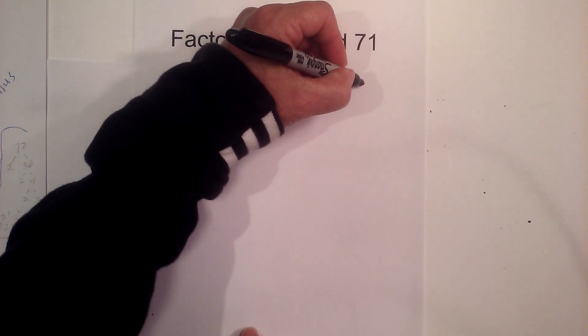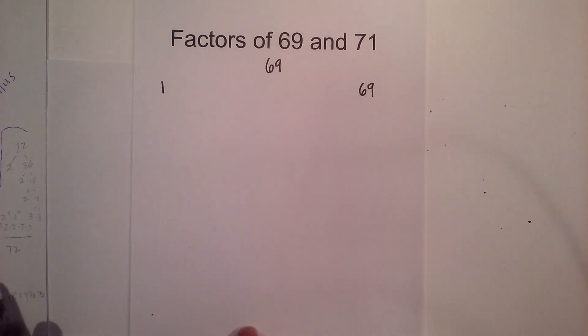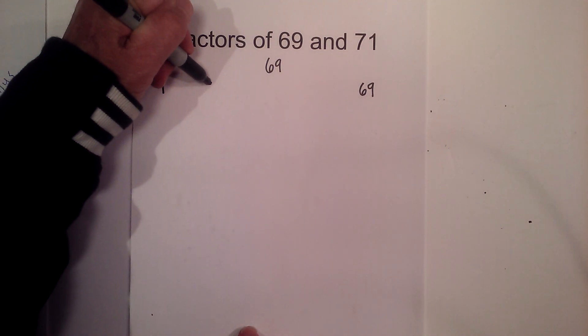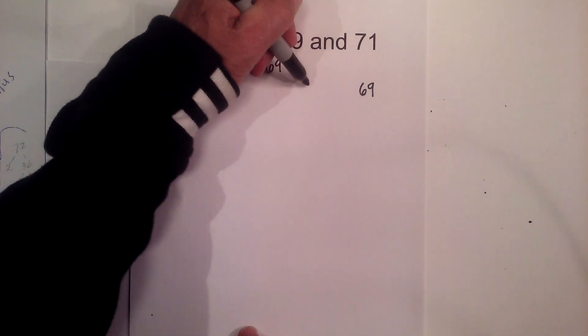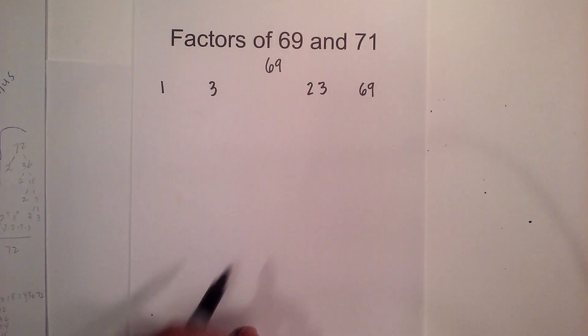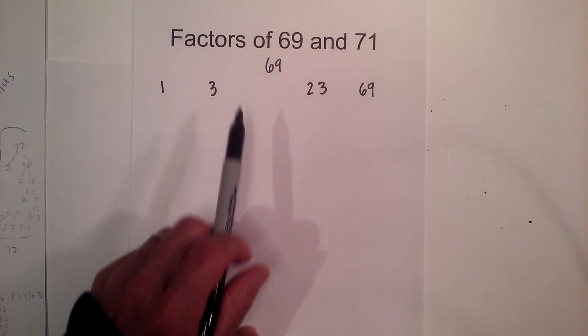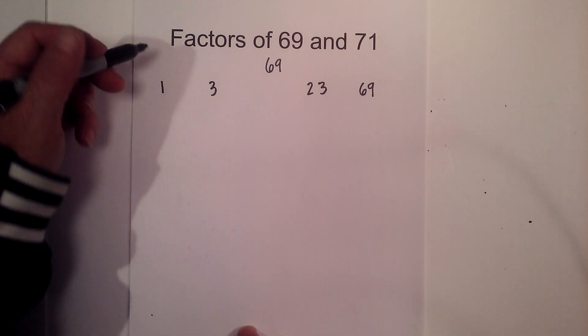Let's start with 1 times 69, and then 2 does not go into 69, but 3 times 23 goes into 69. And then 4, 5, 6, 7, 8, 9, 10, etc. do not go into 69.